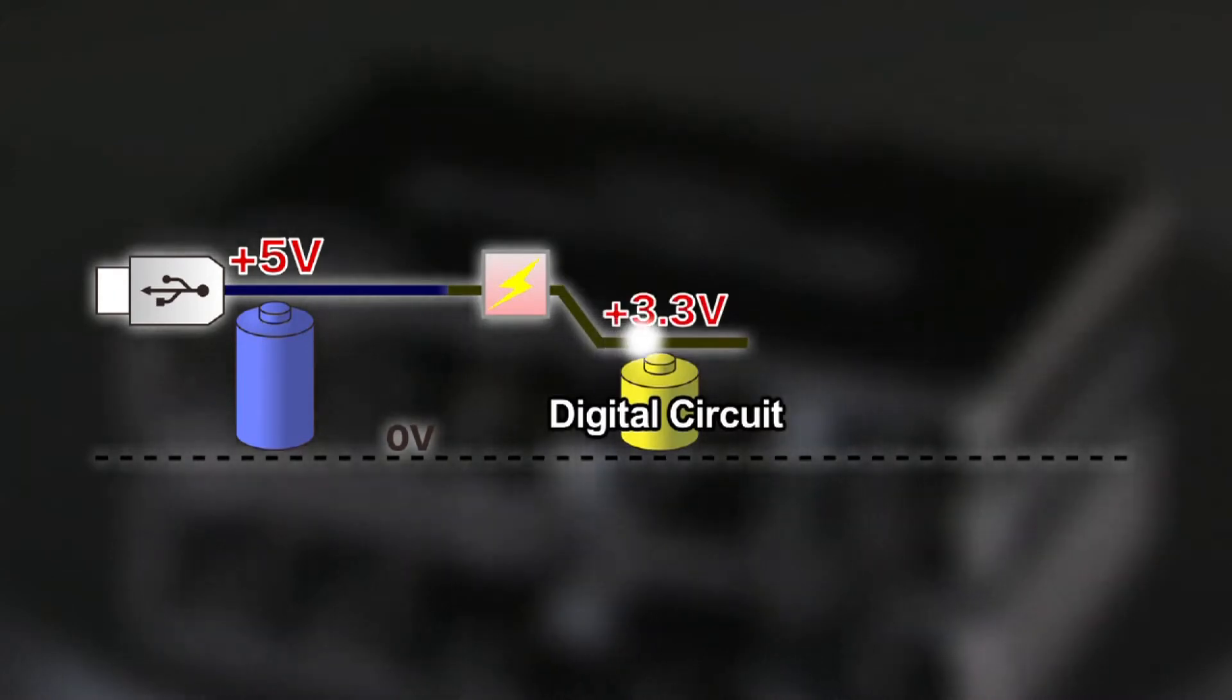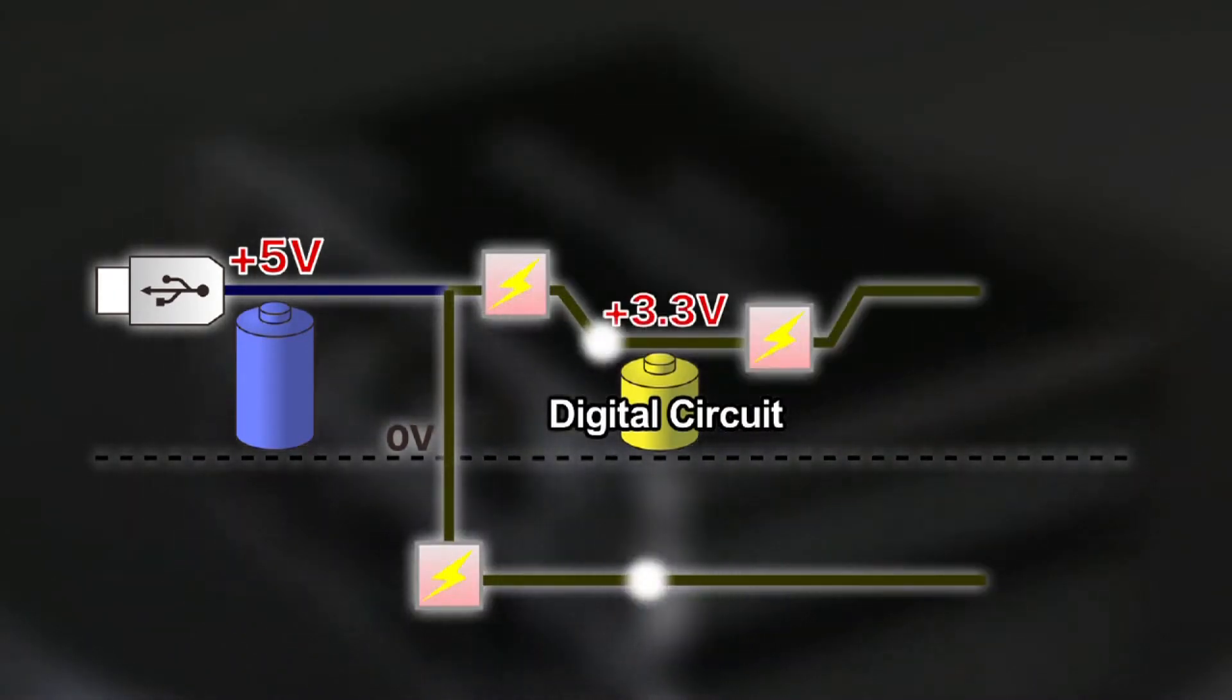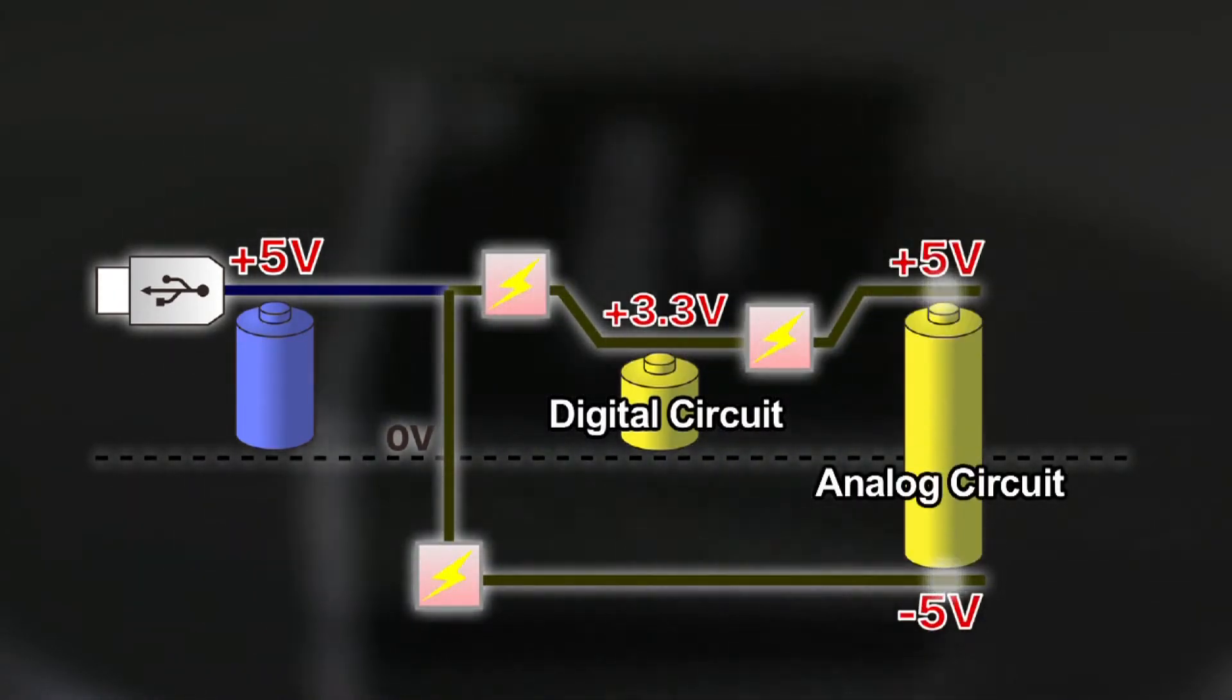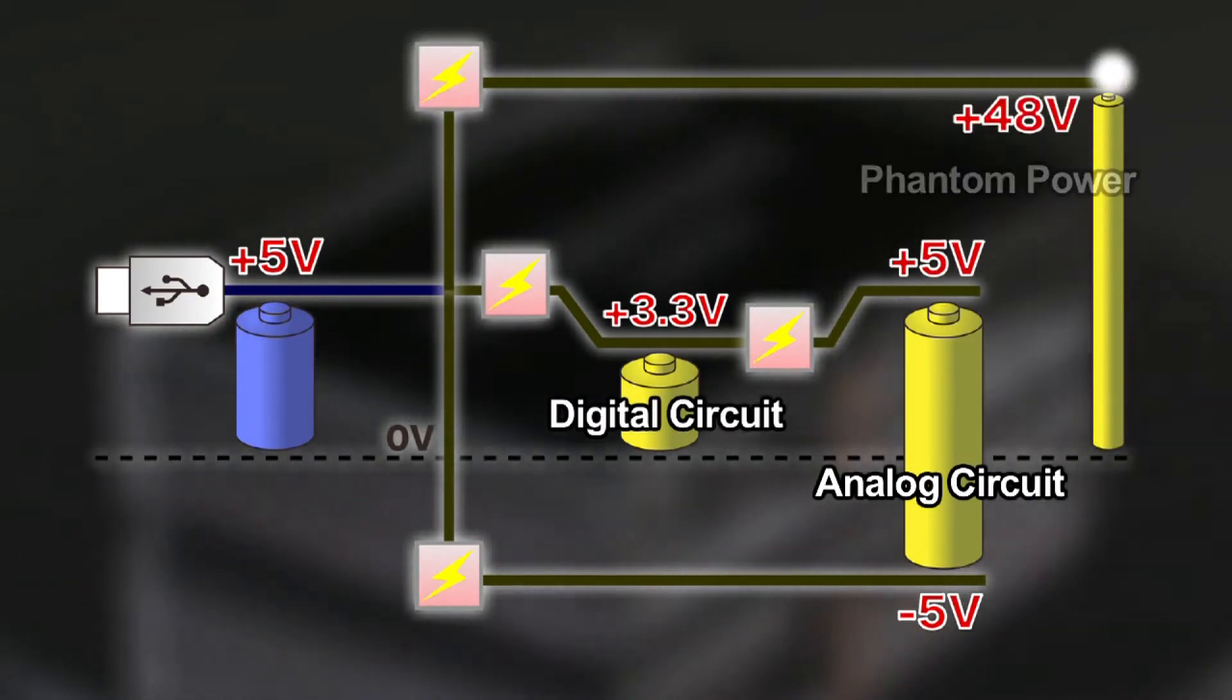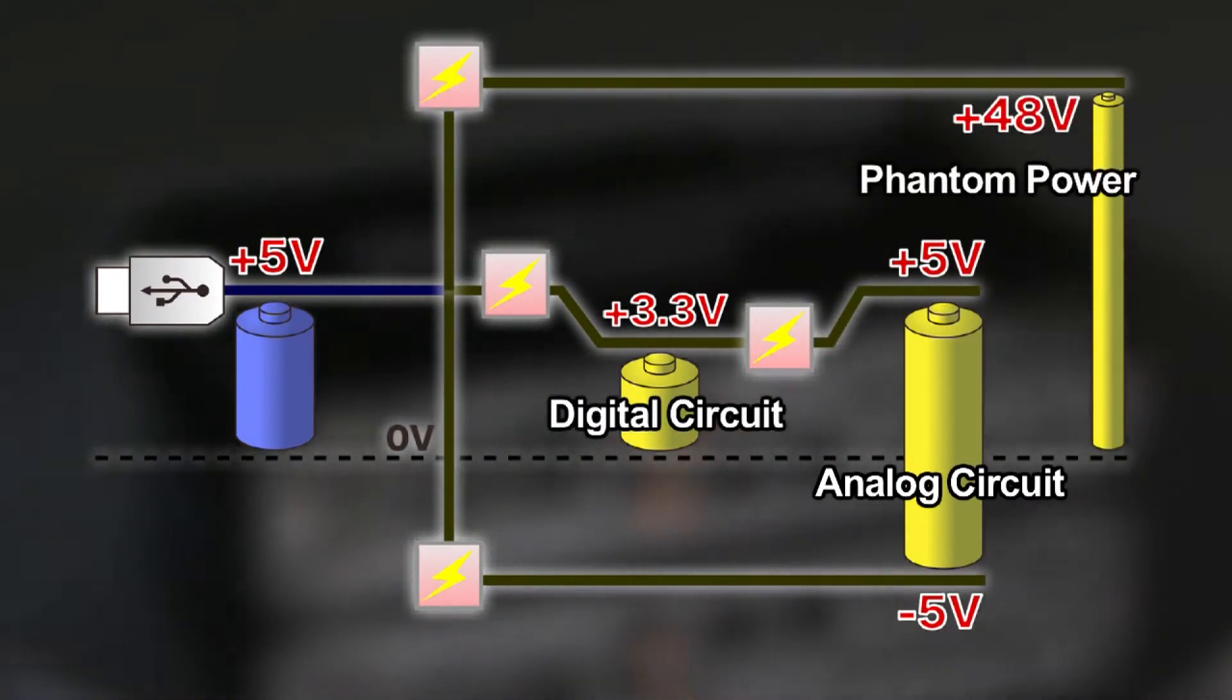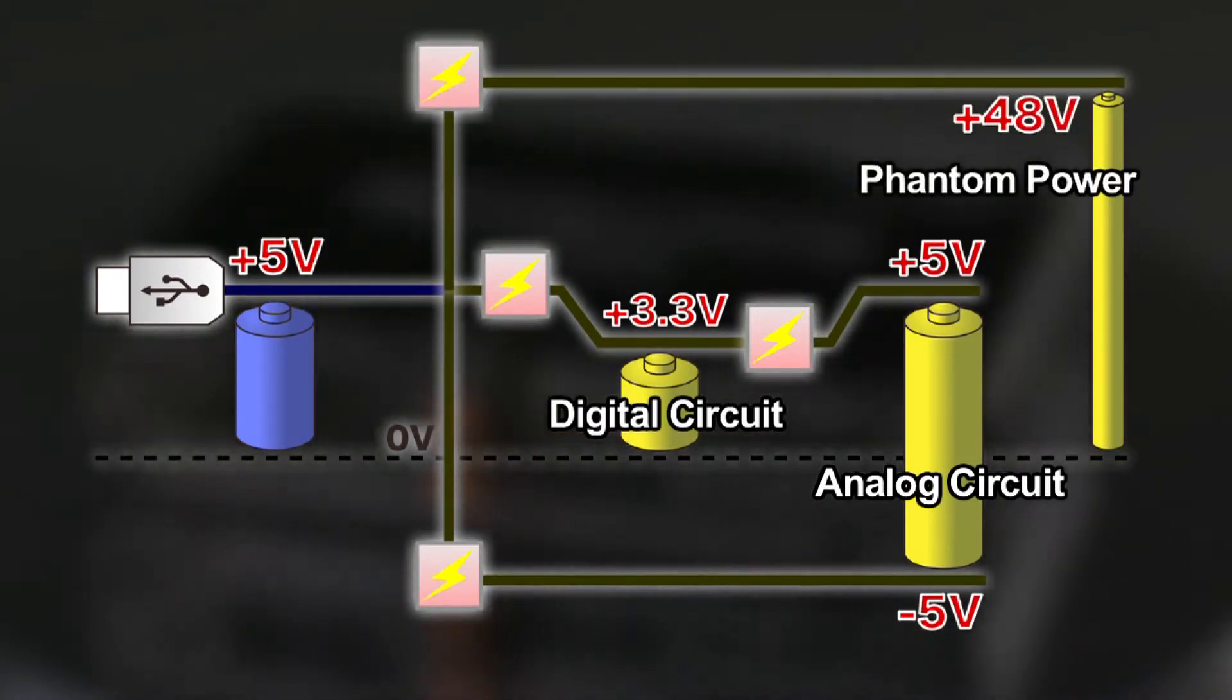One of Quad Capture's key features is its low-noise, wide-ranging power supply. When driven by the USB bus power supply, Quad Capture's power is regenerated, providing the analog circuitry ideal voltage for even greater sound quality and efficiency in mobile environments.